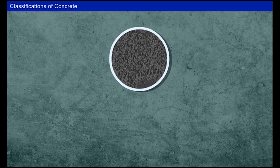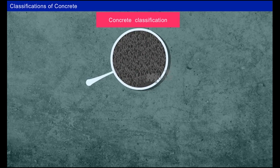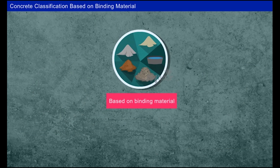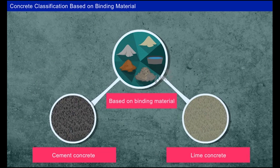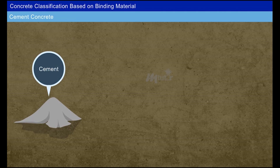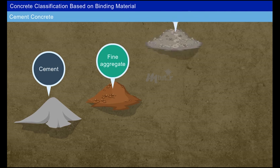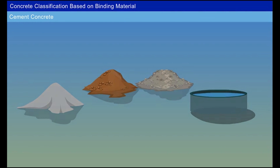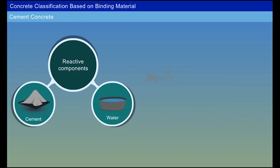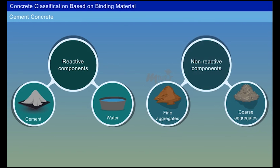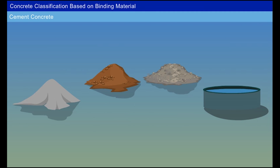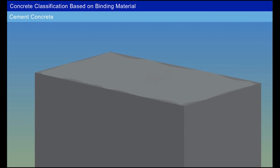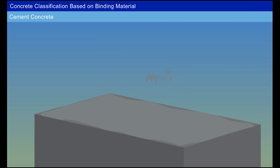The types of concrete can be classified based on their binding material, design, and purpose. Based on binding material, concrete is classified into cement concrete and lime concrete. Cement concrete is a composite material consisting of cement, fine aggregate, coarse aggregate, and water. Cement and water are the reactive components, while fine and coarse aggregates are the non-reactive components. The function of cement is to bind the aggregates together by setting and hardening.